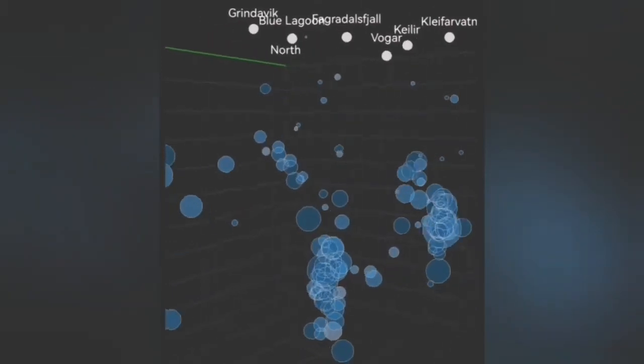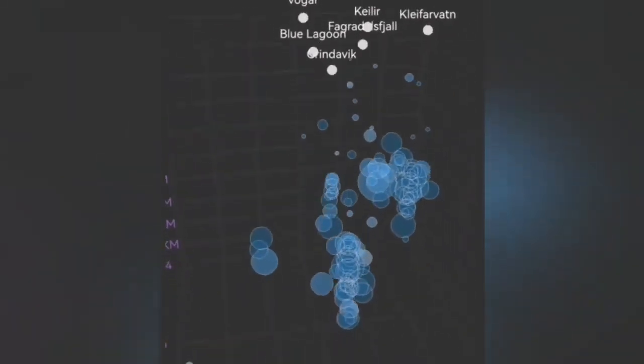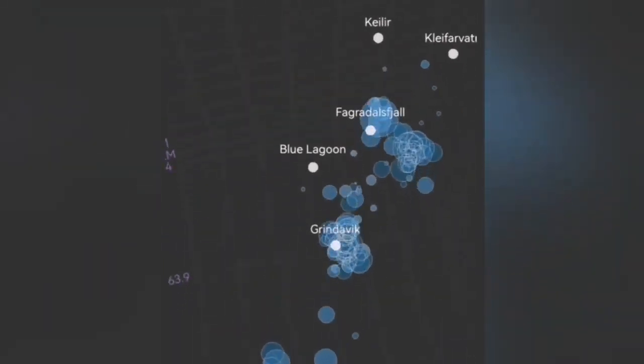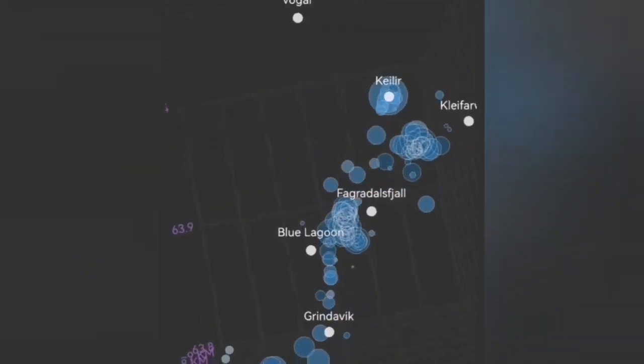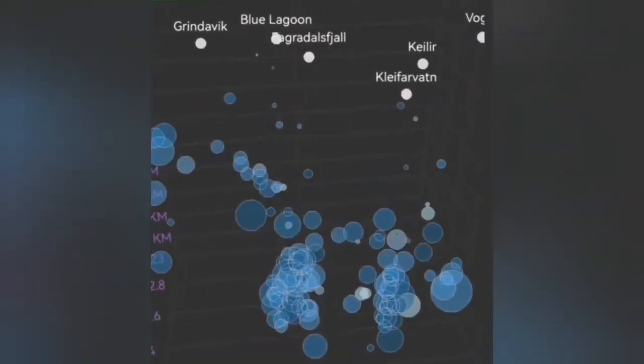You can see at the center the vertical beam of the circles rising to the sky. Then from the above, you can see that it is moving toward the Grindavik.